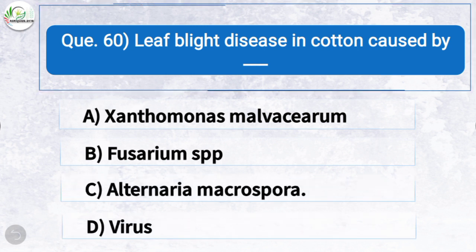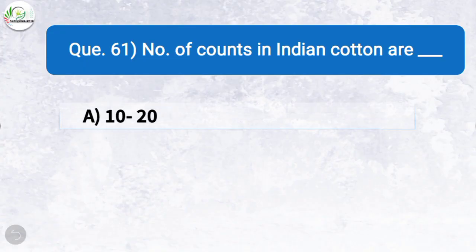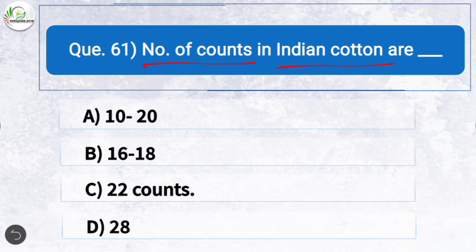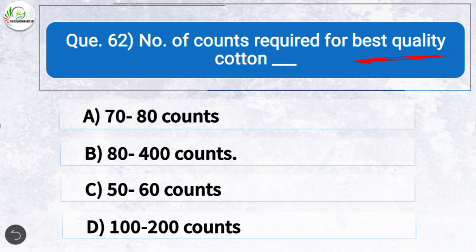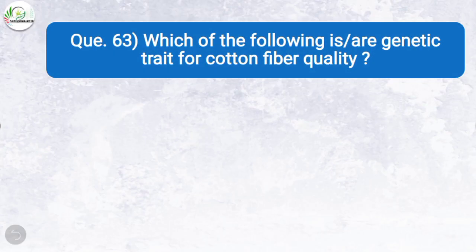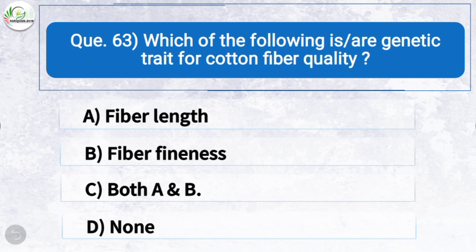Question sixty: Leaf blight disease in cotton is caused by — the correct answer is option C: Alternaria macrospora. Question sixty-one: Number of counts in Indian cotton are — the correct answer is option C: 22. Question sixty-two: Number of counts required for best quality cotton is — the correct answer is option B: 80 to 400. Question sixty-three: Genetic traits for cotton fiber quality are — the correct answer is option C: both fiber length and fiber fineness.